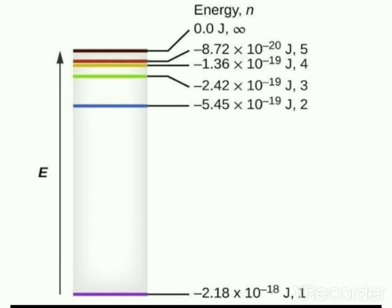The energy of the first orbit is -2.18 × 10⁻¹⁸ joules and that of the second orbit is -0.545 × 10⁻¹⁸ joules. Comparing these, -0.545 × 10⁻¹⁸ is lower than -2.18 × 10⁻¹⁸, which means the energy of the first orbit is lower than the energy of the second orbit. Therefore, as the n value increases, the energy also increases.